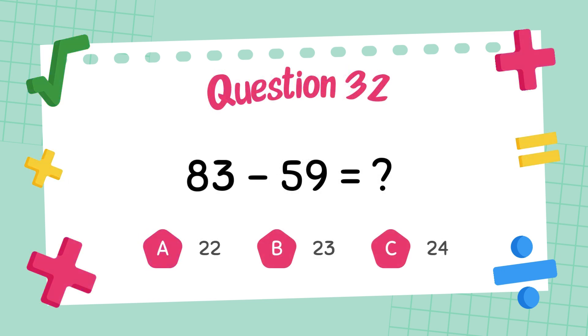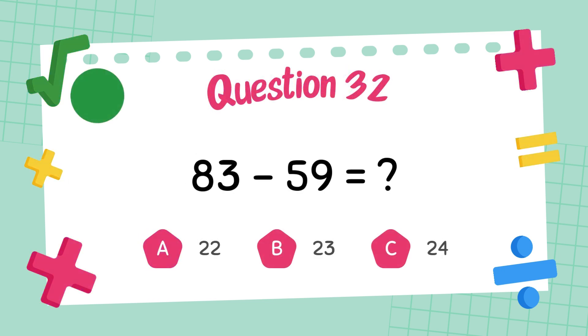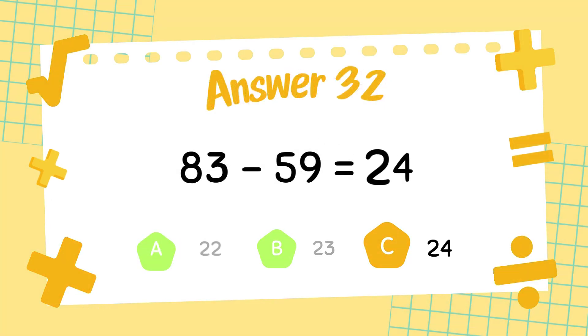What is eighty-three minus fifty-nine? The answer is twenty-four.